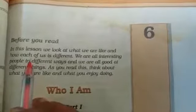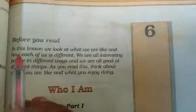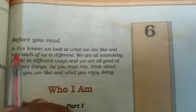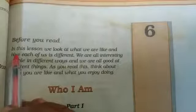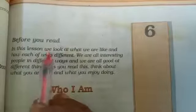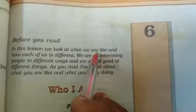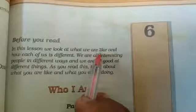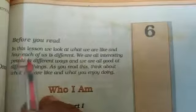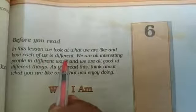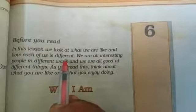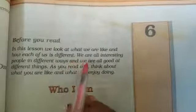Before we read chapter 6, let's understand what this lesson is about. In this chapter, we look at what we are like — what children enjoy, what they like. We will also see how each of us is different and how we prefer different things from one another.